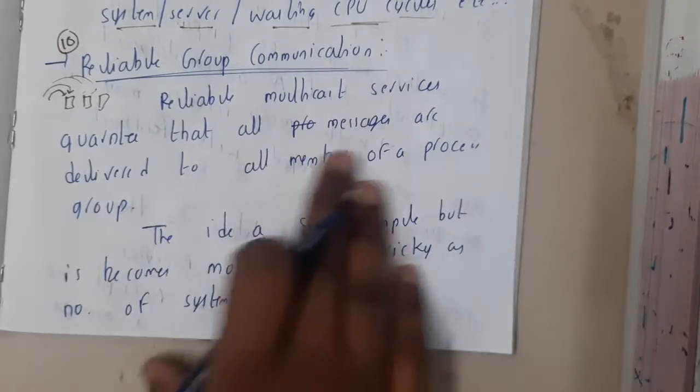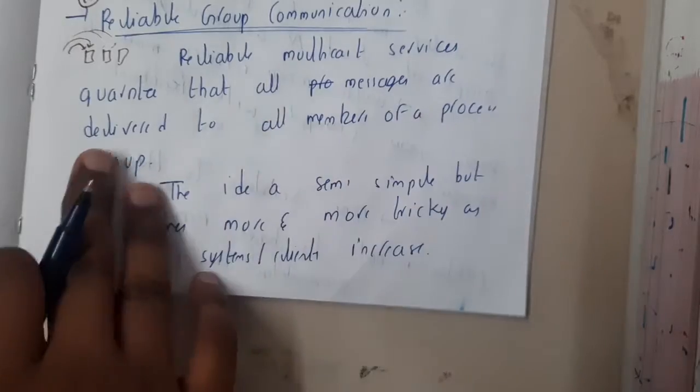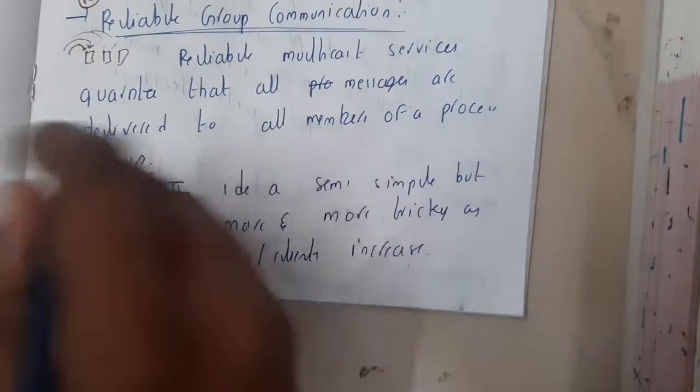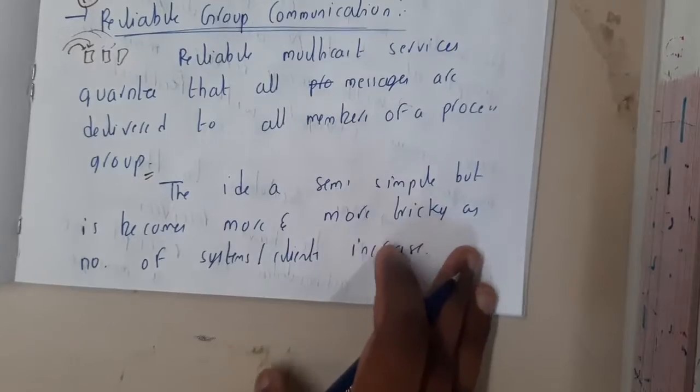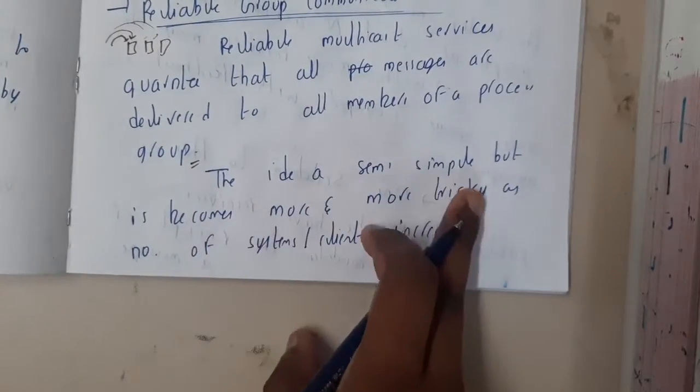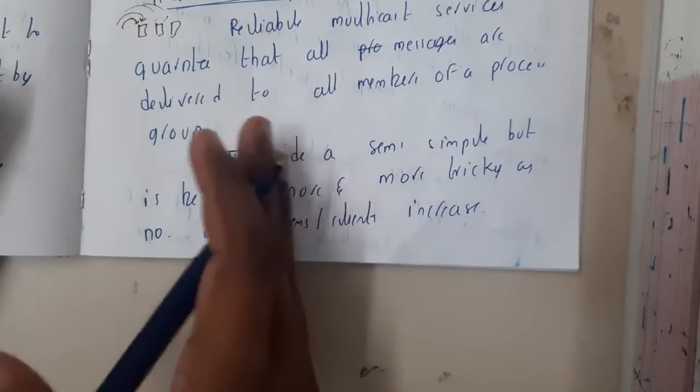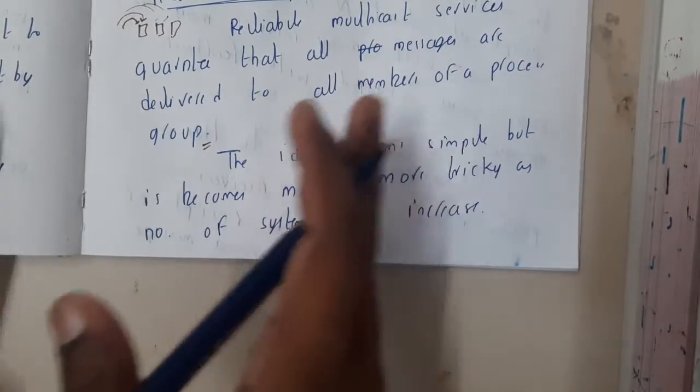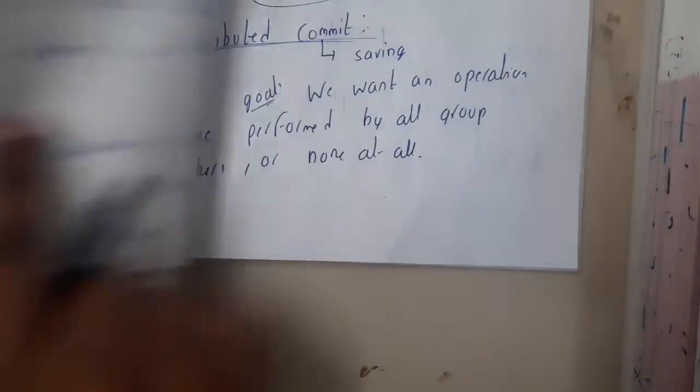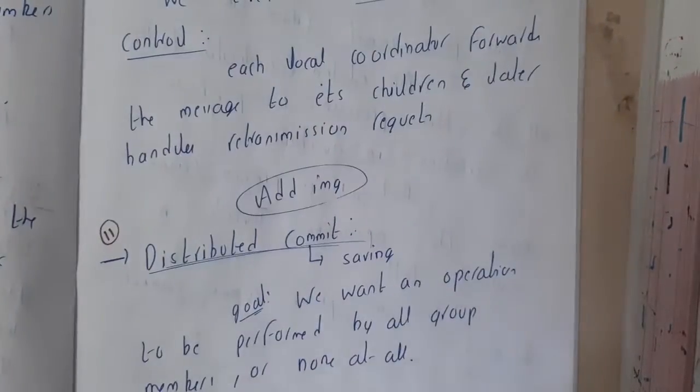Reliable multicasting services guarantee that all messages are delivered to all the members in a proper way by using the group concept. The idea seems simple, but implementing this is really tricky when the number of systems increases.